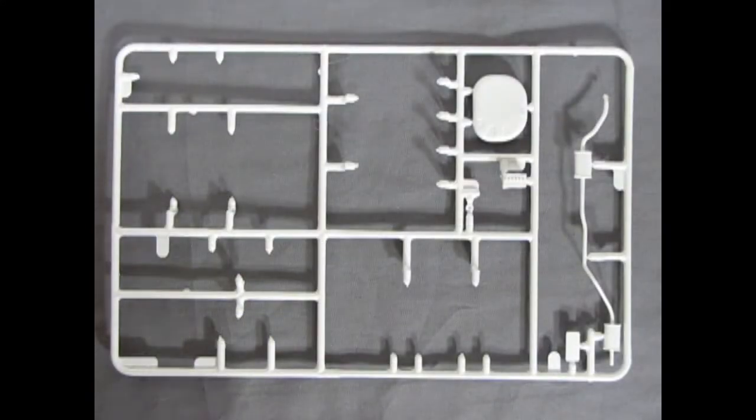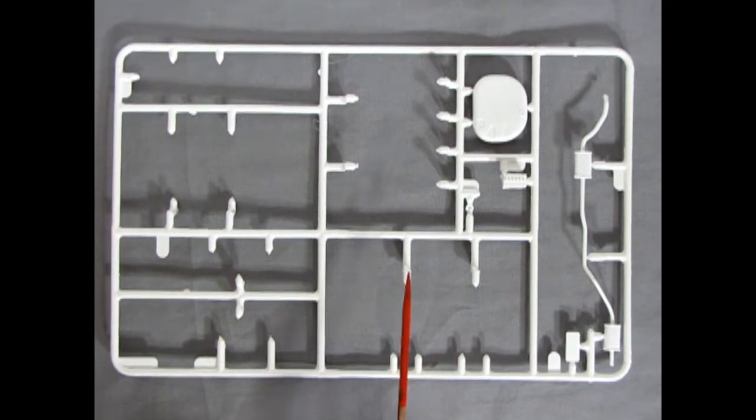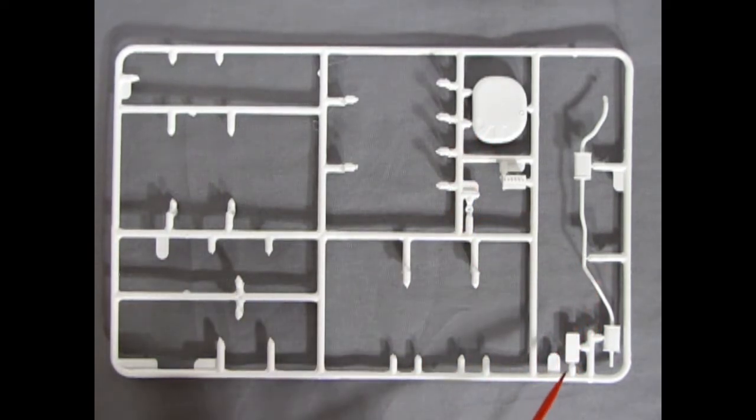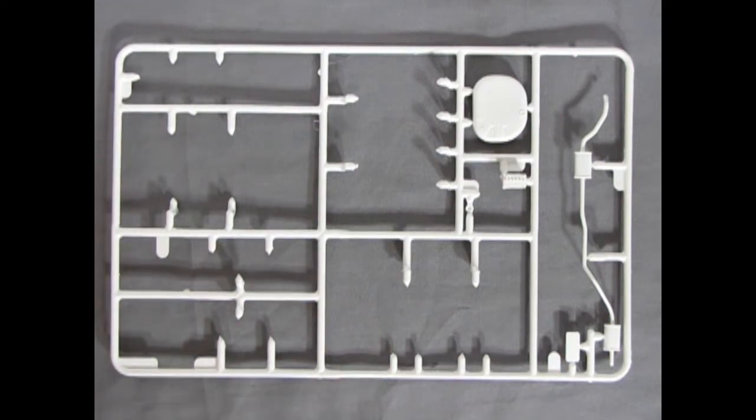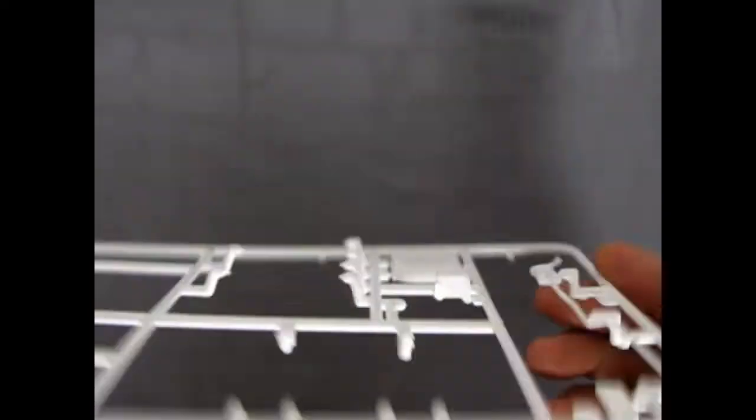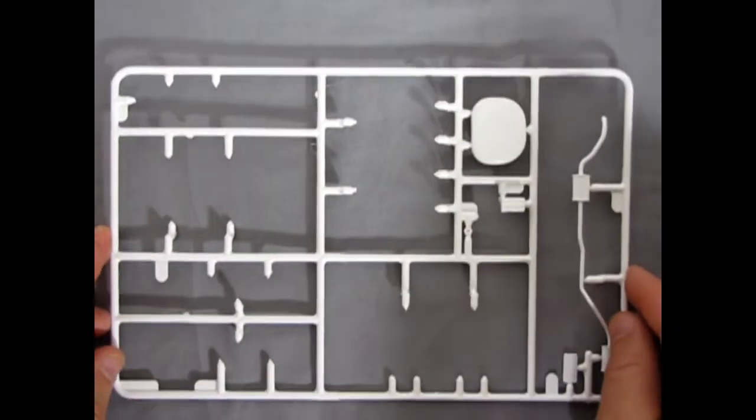Now this parts tree must have had the majority of interior and hood and body pieces on it because there's not much left. We do have the gas tank, the battery, and the exhaust pipe as well as the license plate over here. So again pretty crisp on the fuel cell and the battery. Apart from that, not too much else going on. So let's see the next part tree.